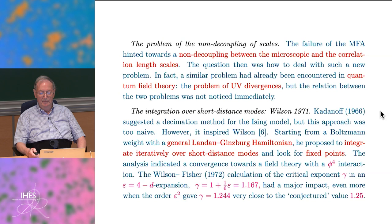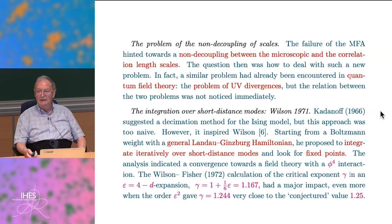It took some time to realize that the failure of mean field theory was the effect of non-decoupling of scales. This was such a bizarre phenomenon. Even though it had been observed in quantum field theory and led to the problem of renormalization, the status of renormalization theory was obscure—it was a kind of magical trick to transform something infinite into something finite. The deep meaning of renormalization was not understood.